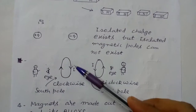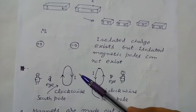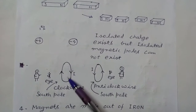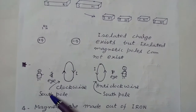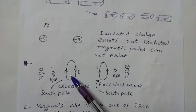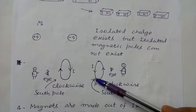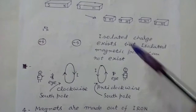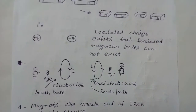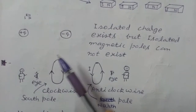We know that a current carrying loop also behaves as a magnet. This explains why north pole and south pole cannot be separated. Suppose this is a current carrying loop and an observer sees it from one side — the current is clockwise, so this end behaves as a south pole and field lines enter from here. If the same observer sees it from the other side, the current is anticlockwise, so that end behaves as a north pole. This is the reason why north pole and south pole cannot be separated.